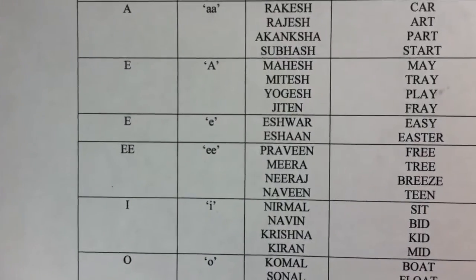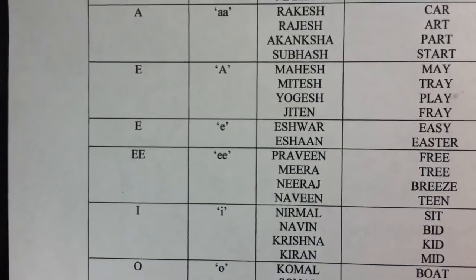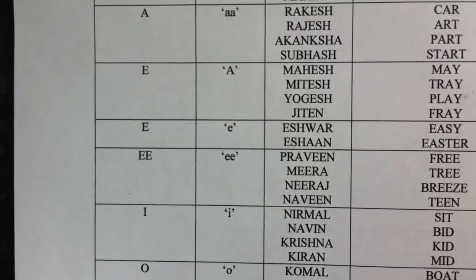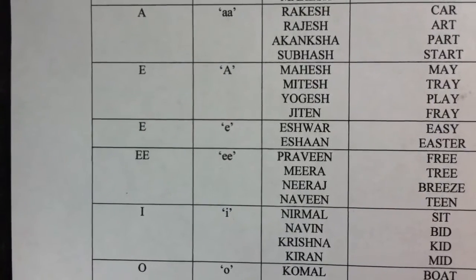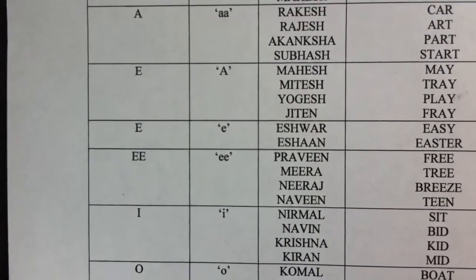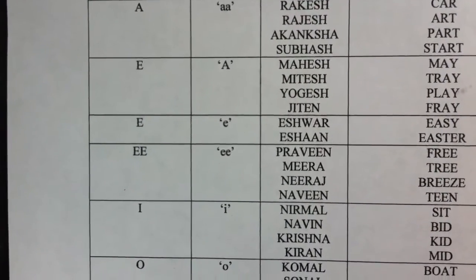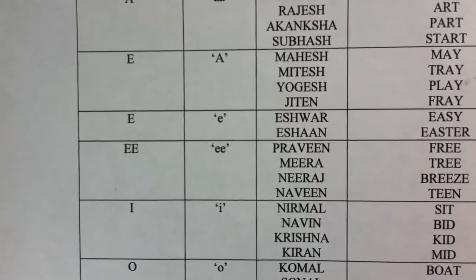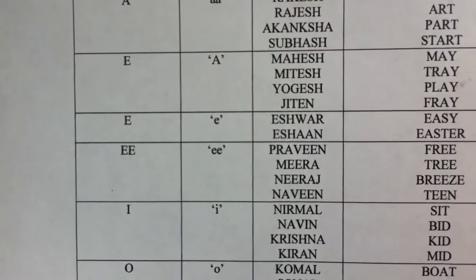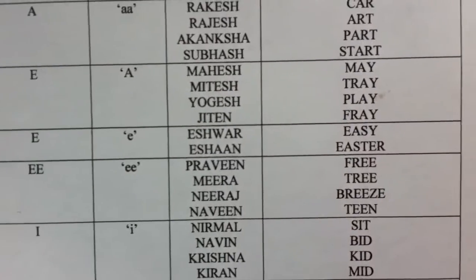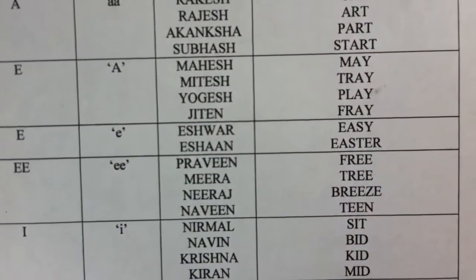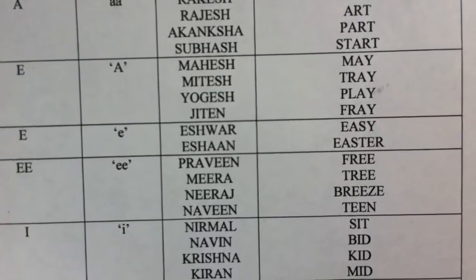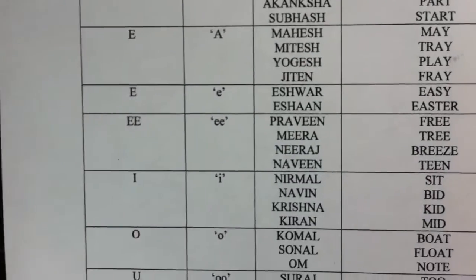When double E is seen in a name, it would take the conventional 'ee' pronunciation. Examples of names would be Praveen, Meera, Neeraj, Naveen, etc. And some words from the English dictionary for reference would be Free, Tree, Breeze, Teen, etc.